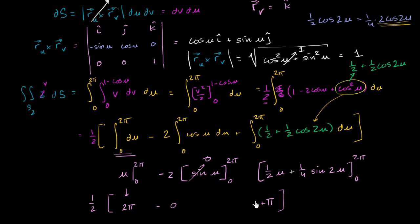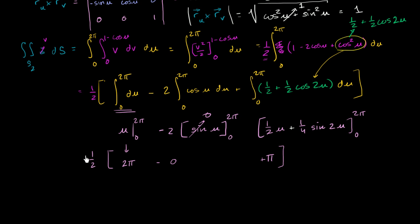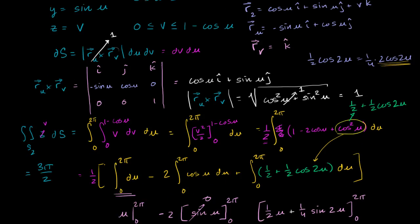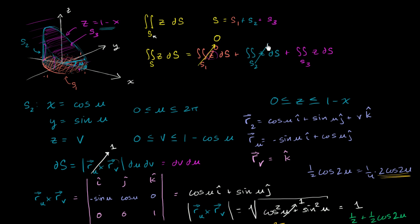We're in the home stretch for surface 2. The surface integral for surface 2 is one-half times (2π minus 0 plus π), which is one-half times 3π, equal to 3π/2. So surface 2 gives us 3π/2. Surface 1 contributed 0, and now this part is 3π/2. In the next video we'll tackle surface 3.